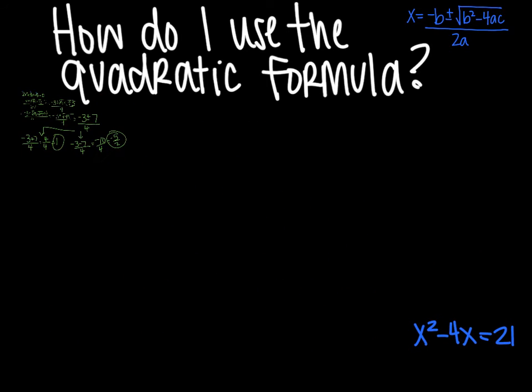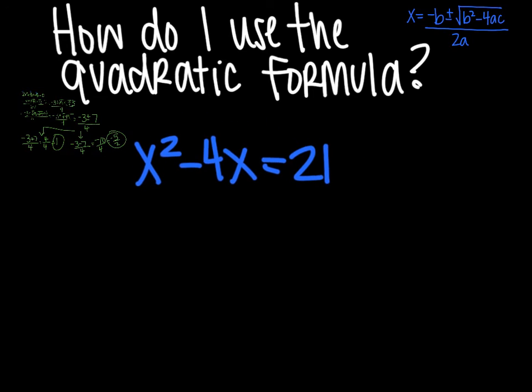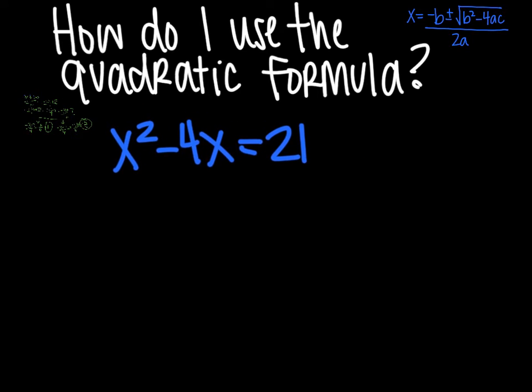Alright, next problem. Here you can see that we are not equal to 0. So that's the first thing we need to do. So x squared minus 4x and then subtract 21 will give me 0. Now I have my a, b, and c term.